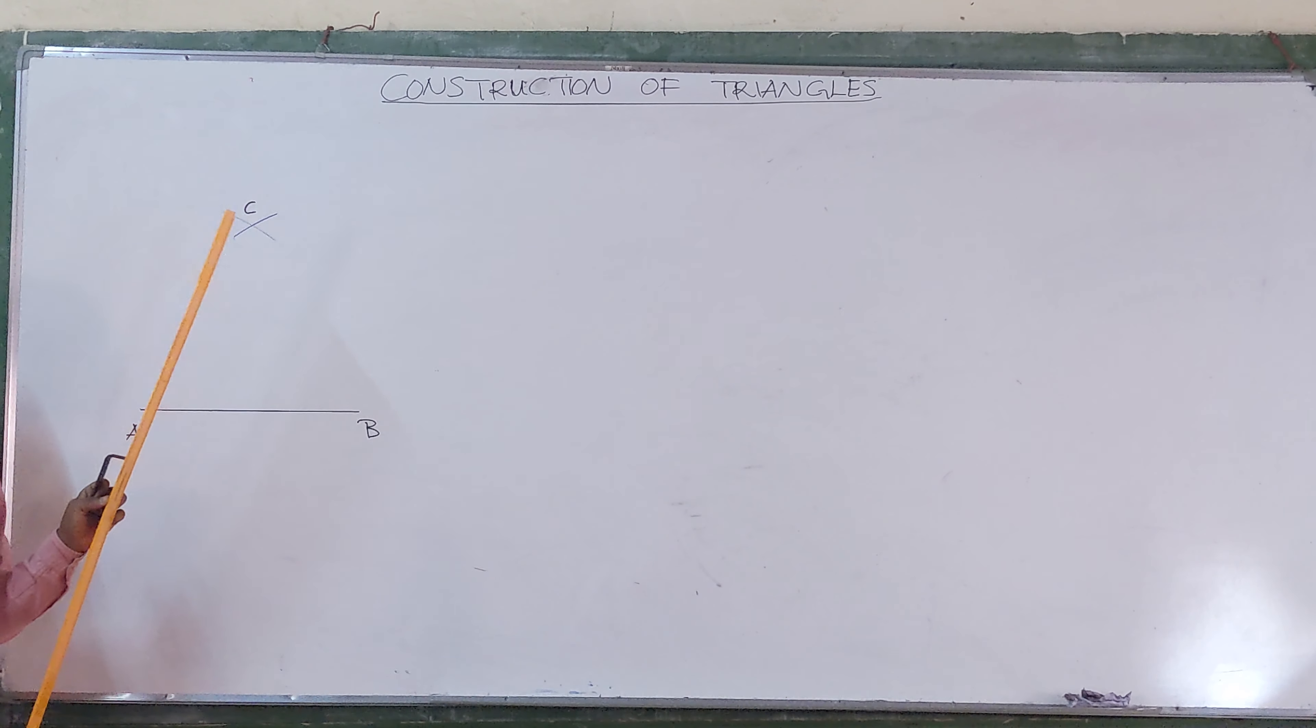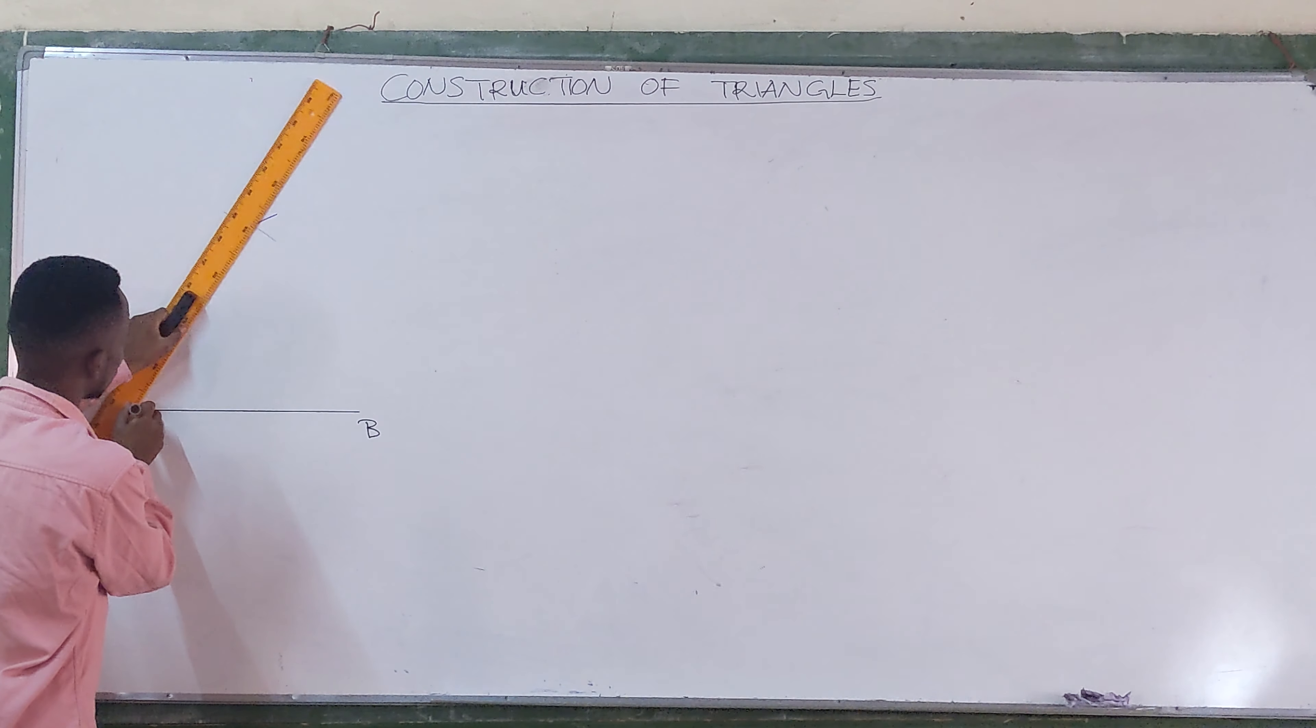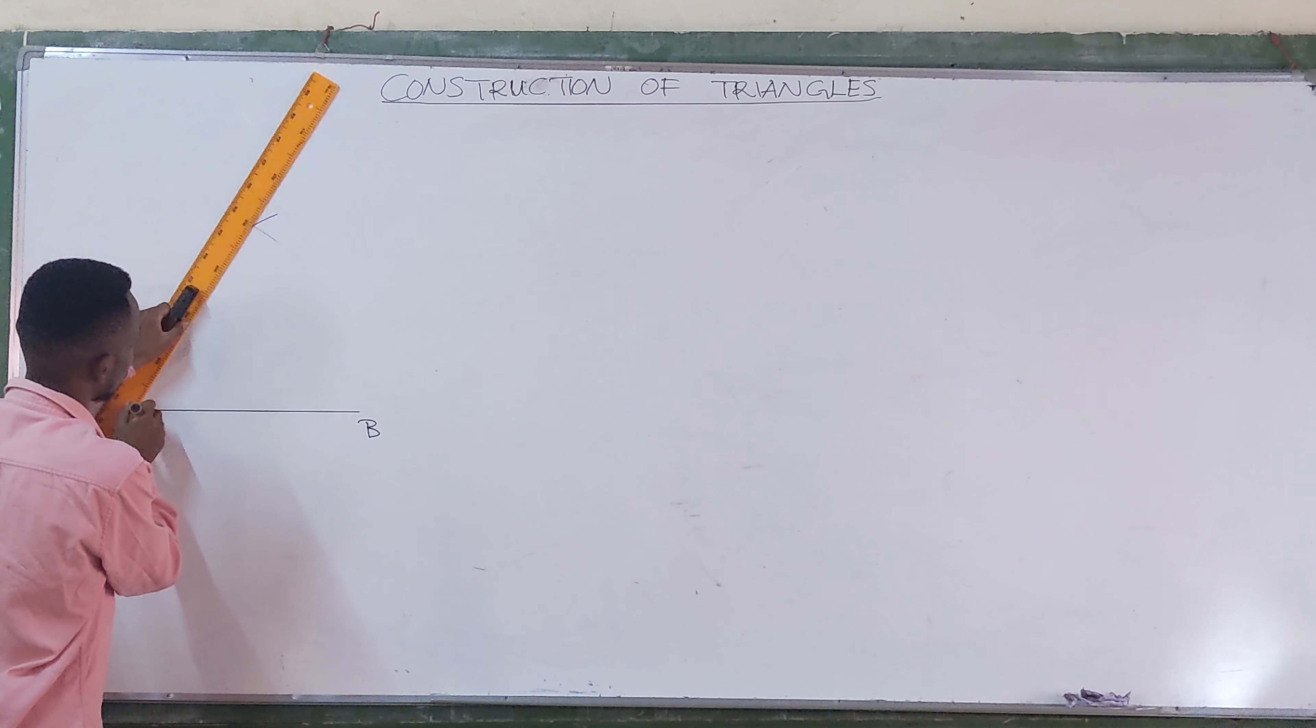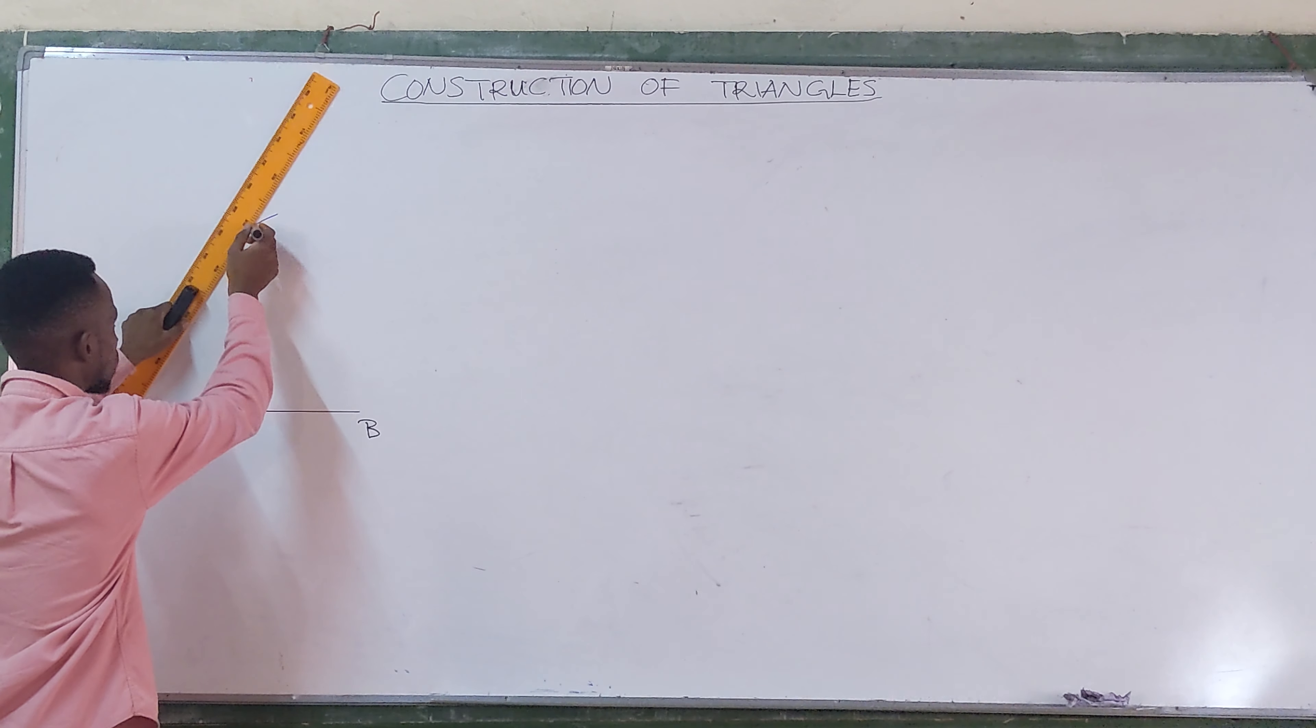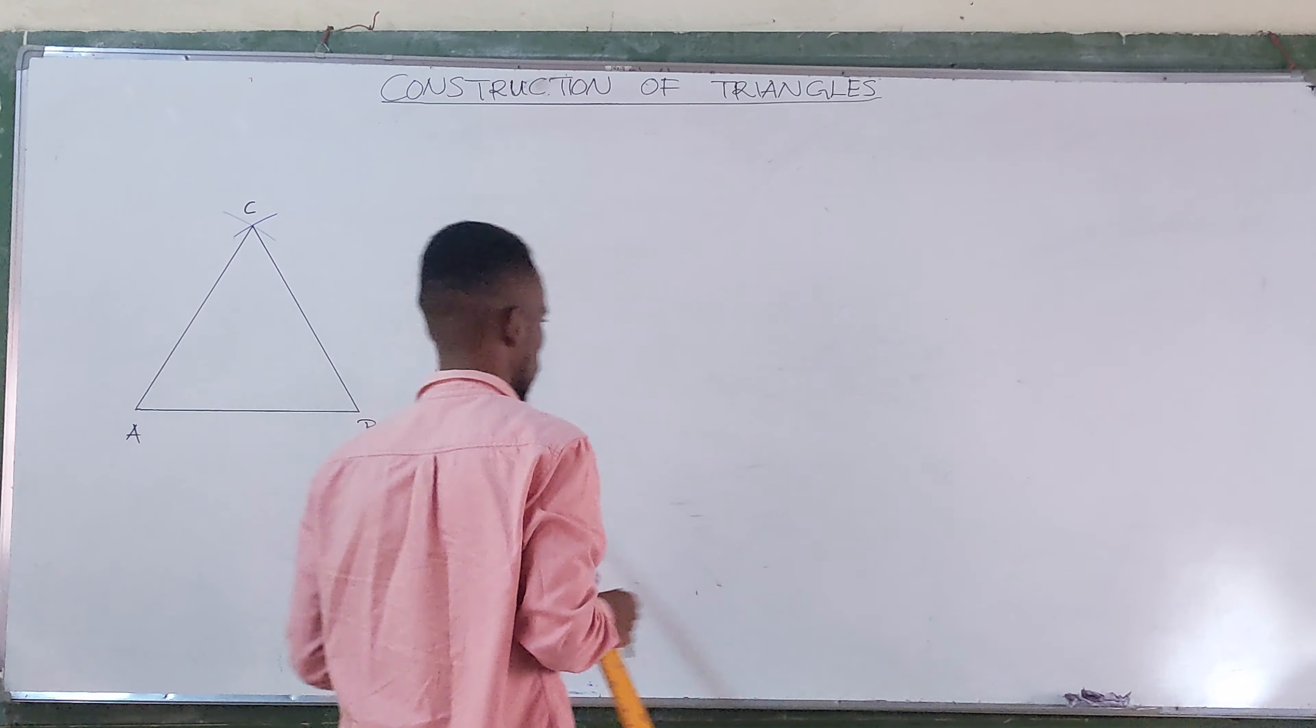The next step is you just join the points with straight edges. So from point A, yes, because this is the required triangle. C to B there.